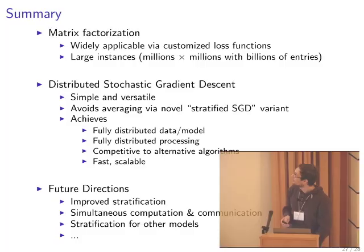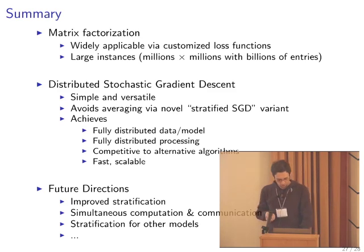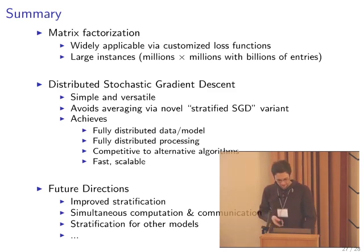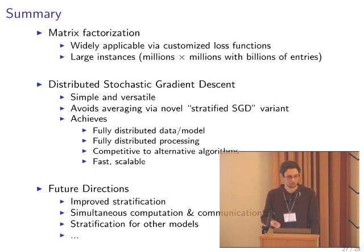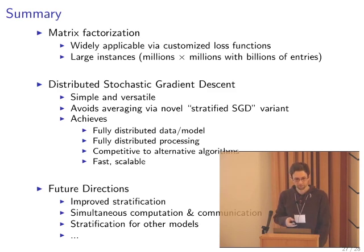To summarize: I talked about matrix factorization, which you can use for different problems by customizing the loss functions — for example, images, movie recommendation, topic models. You can have large instances in practice: millions of rows, millions of columns, billions of entries. The distributed stochastic gradient descent I showed is very simple and versatile — you can implement it with just a few lines of code. Instead of averaging, you make sure that workers always operate on different parts of the parameter space. The data, model, and processing are all fully distributed, and it is competitive with alternative algorithms. Future work includes improving the stratification to reduce the gap I showed, and applying this idea to other machine learning models.